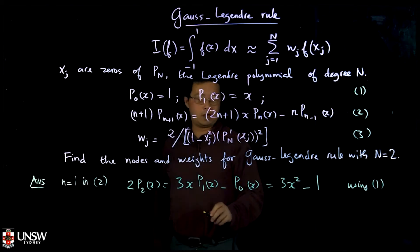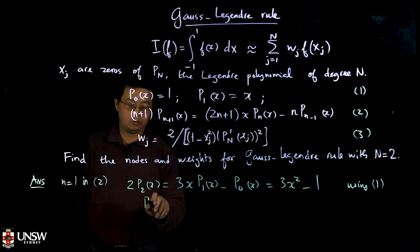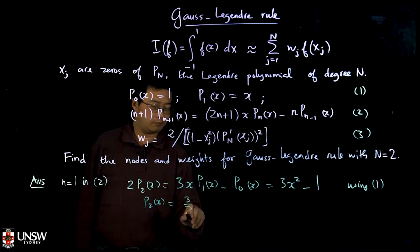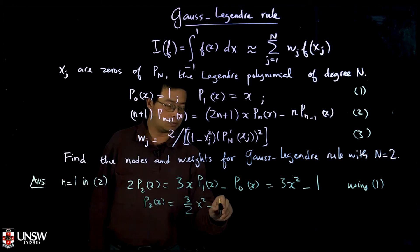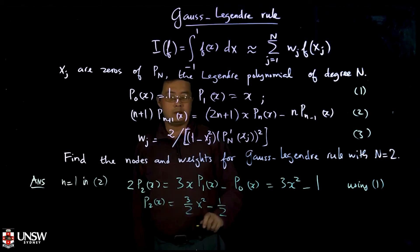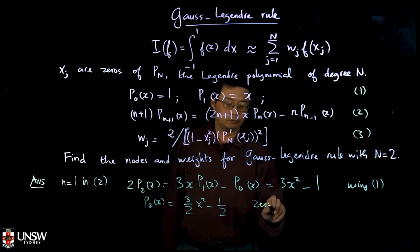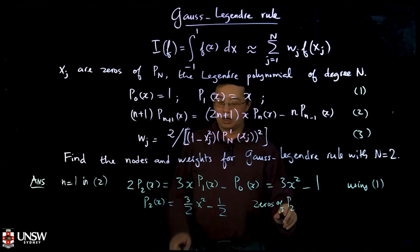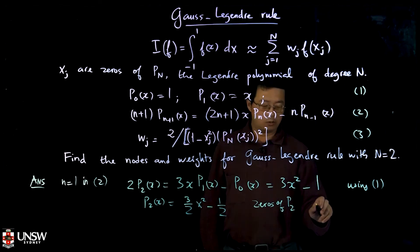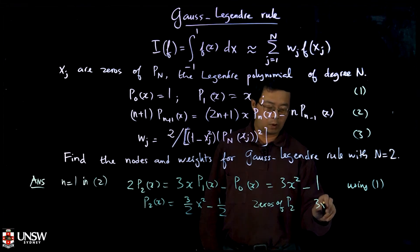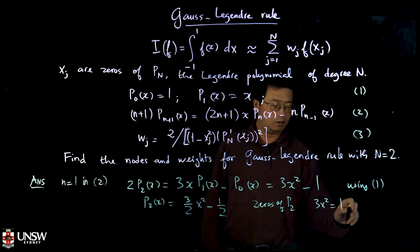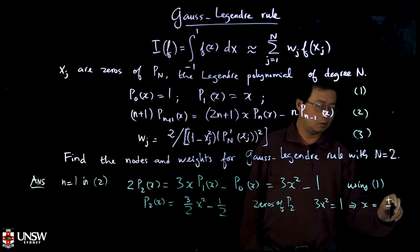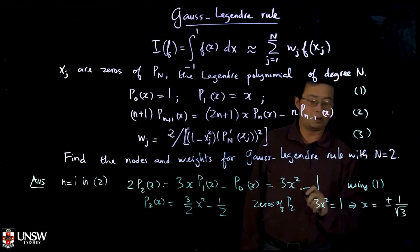Therefore you have P₂(x) is just three half x square minus one half. You can see that the zeros of P₂, you just set this one equal zero. When you set this one equal zero, then you have three x square equal one, or you have x is plus minus one over square root three.